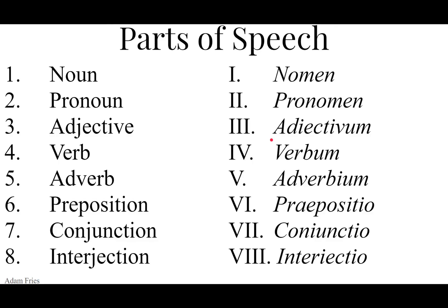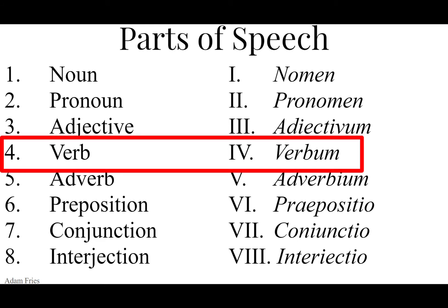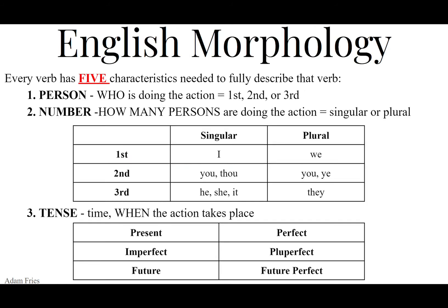We are working with verbs once again when we talk about mood. Mood is a property of a verb. Before, we said that verbs have three things that a verb needs to have in order to be a verb. A verb needs to have person, a verb needs to have number, and the verb needs to have tense. We defined person as who is doing the action — first, second, or third person, as you can see on the chart.